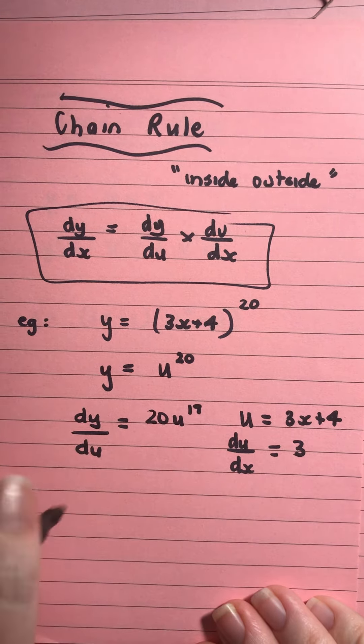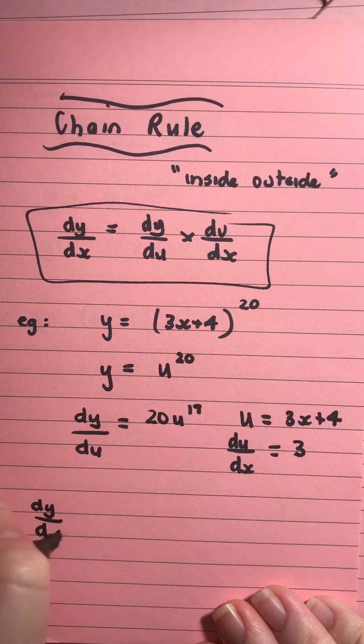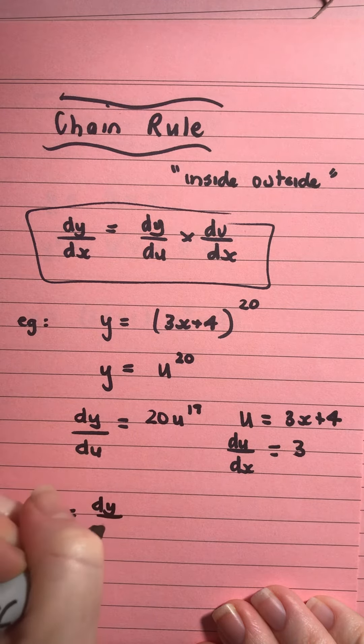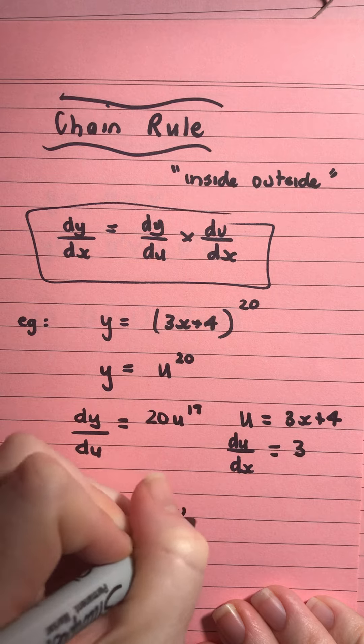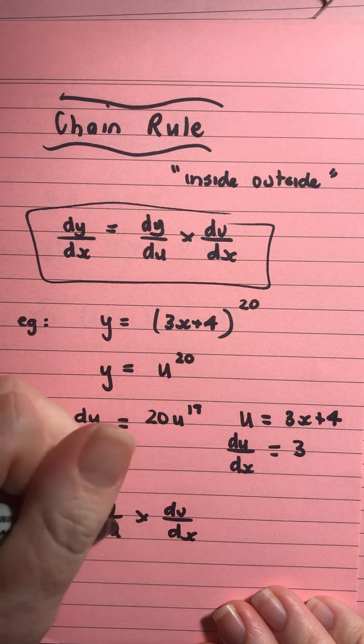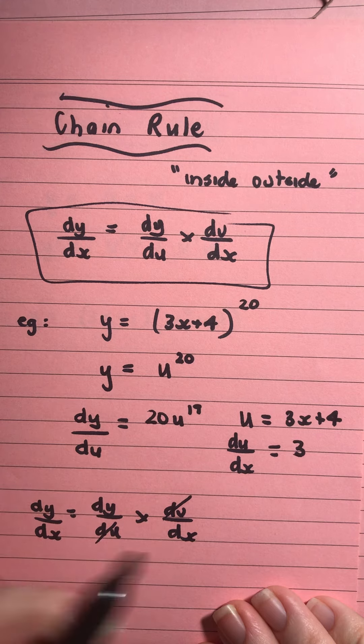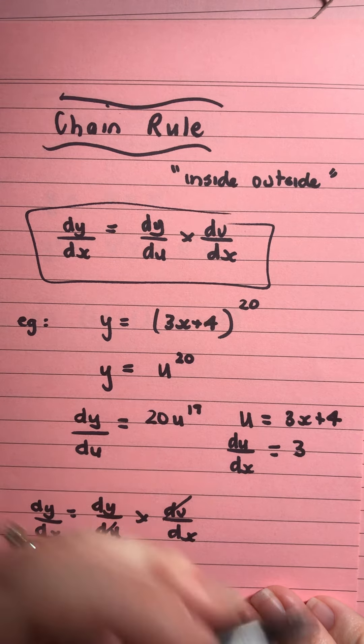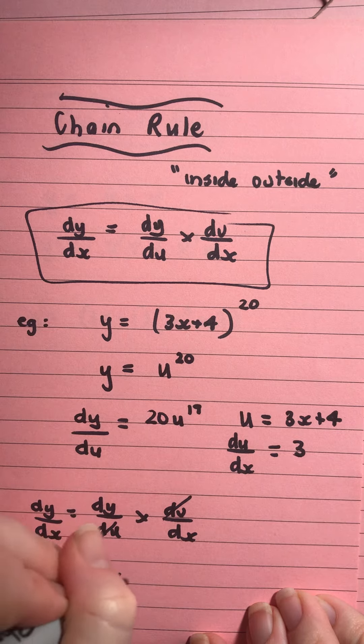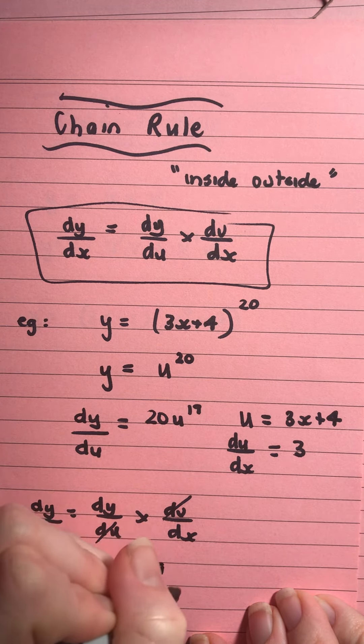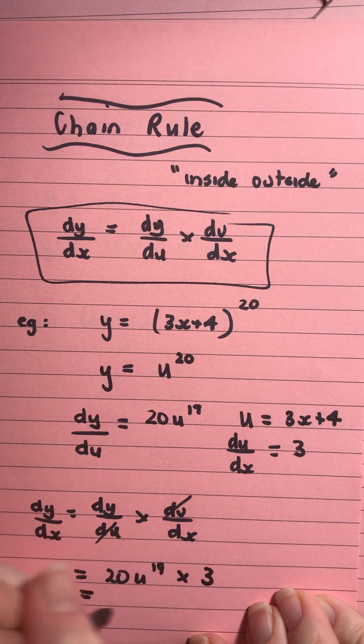Once I've done that, I'm just going to put those pieces together. So, my dy on dx is equal to dy on du times du on dx. And you can see that that's where the du's will cancel out and you're left with the dy on dx. That's how that works. So, I'm going to put that together.